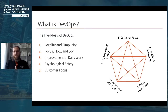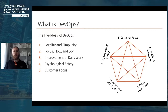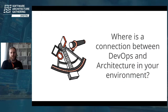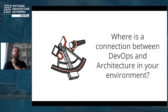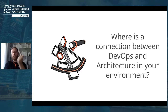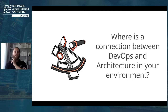We have five minutes left. I would like to give you a small chance of reflecting on what I just said. Take the pen and paper you have already prepared and think for one minute: where is the connection between DevOps and architecture in your specific environment — your customer, the company you work for? Where is the connection between DevOps and architecture in your environment?